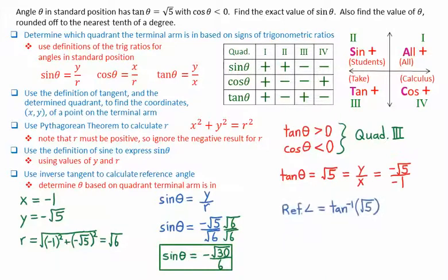Now to figure out angle theta. First, find the reference angle, taking the inverse tangent of root 5. This gives a reference angle of 65.9 degrees. In this case, we have an angle in quadrant 3, so theta will be 180 degrees plus the reference angle, giving theta equals 245.9 degrees.